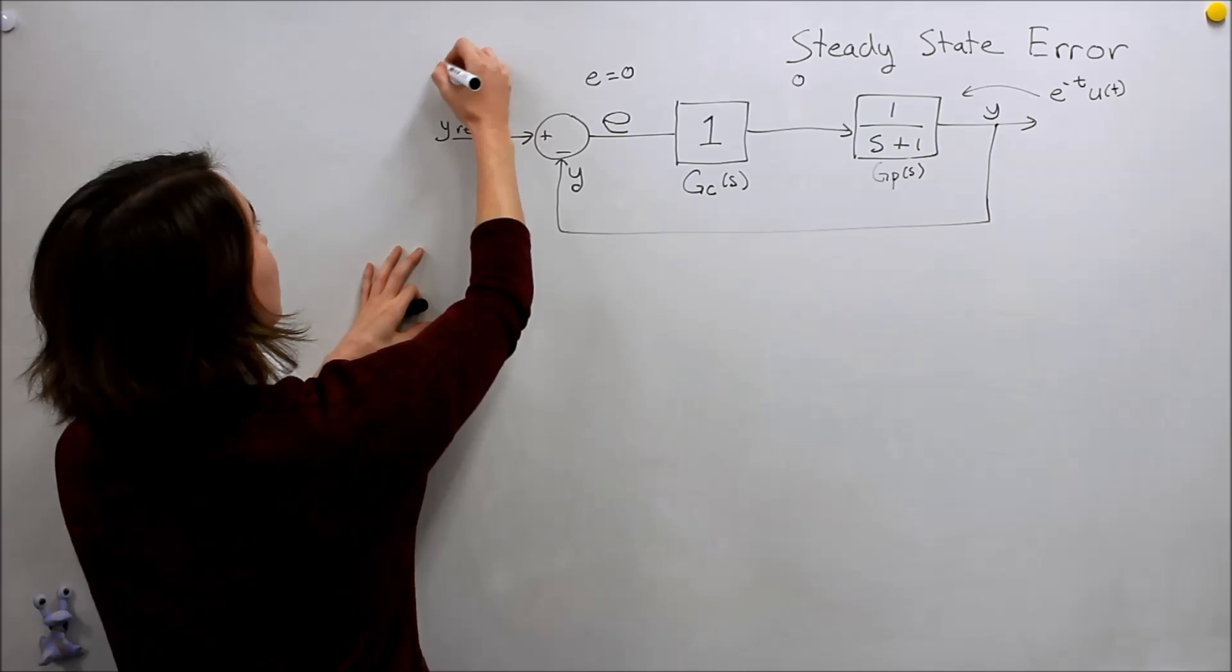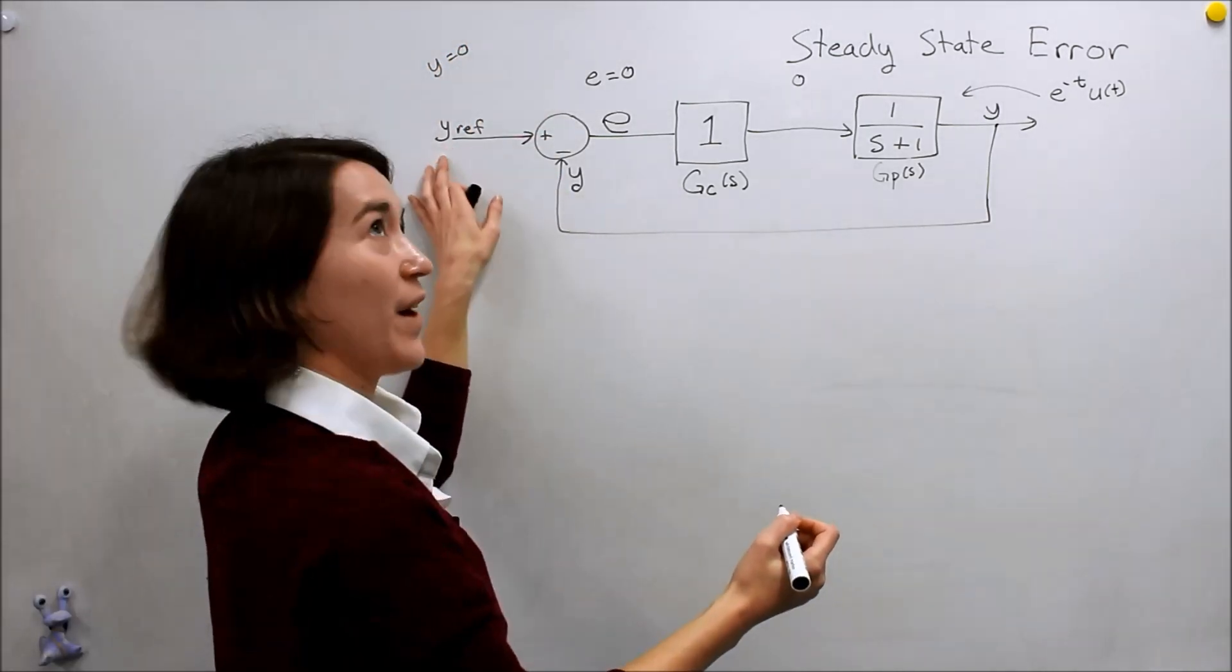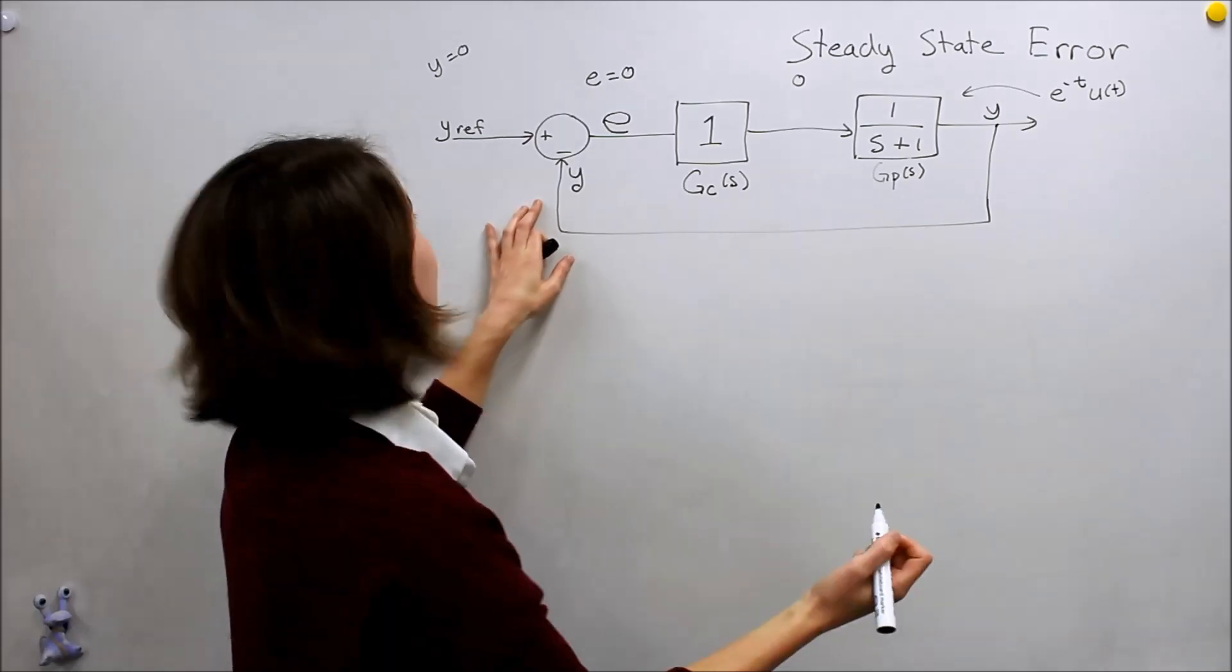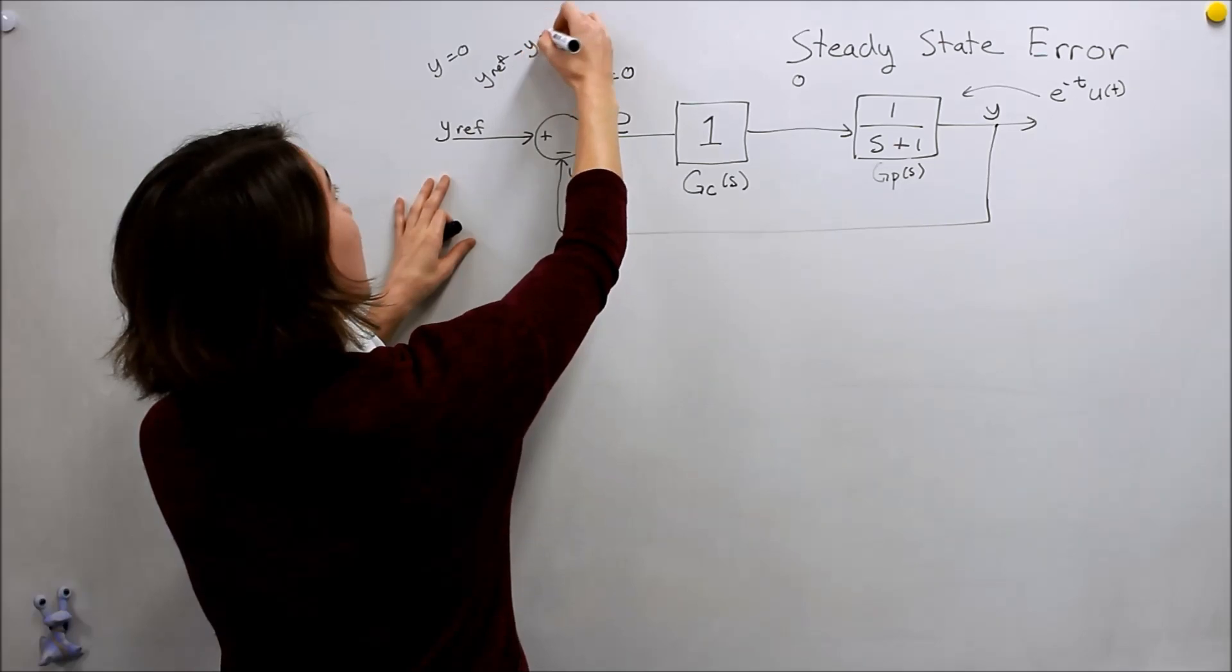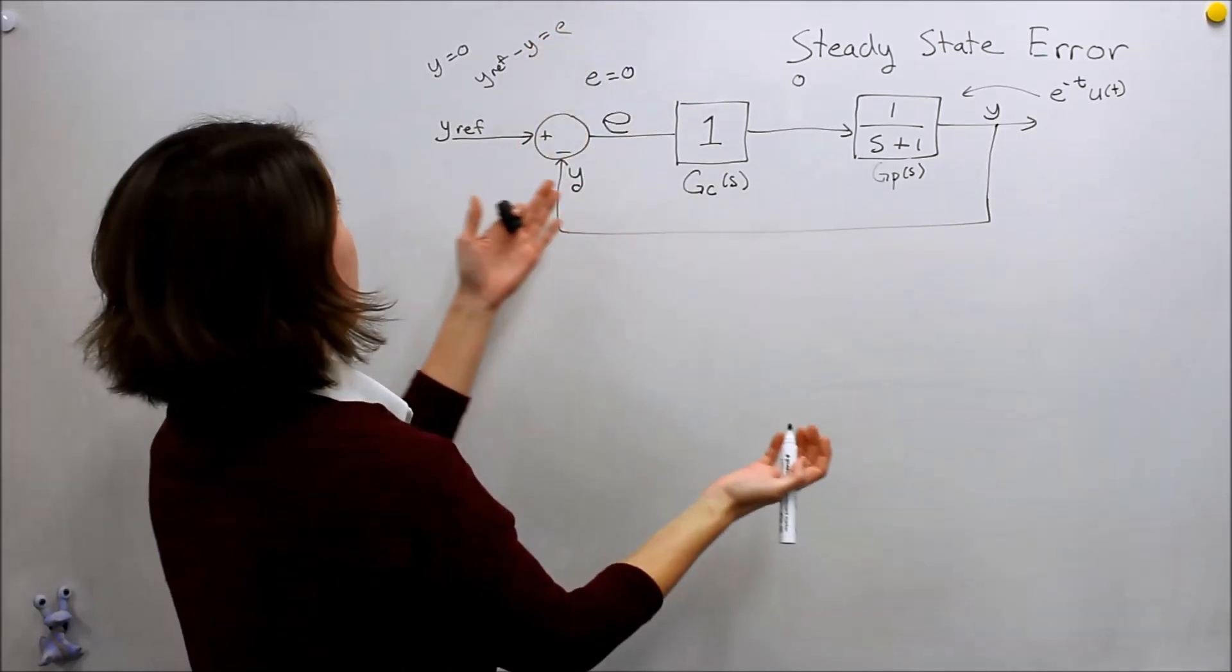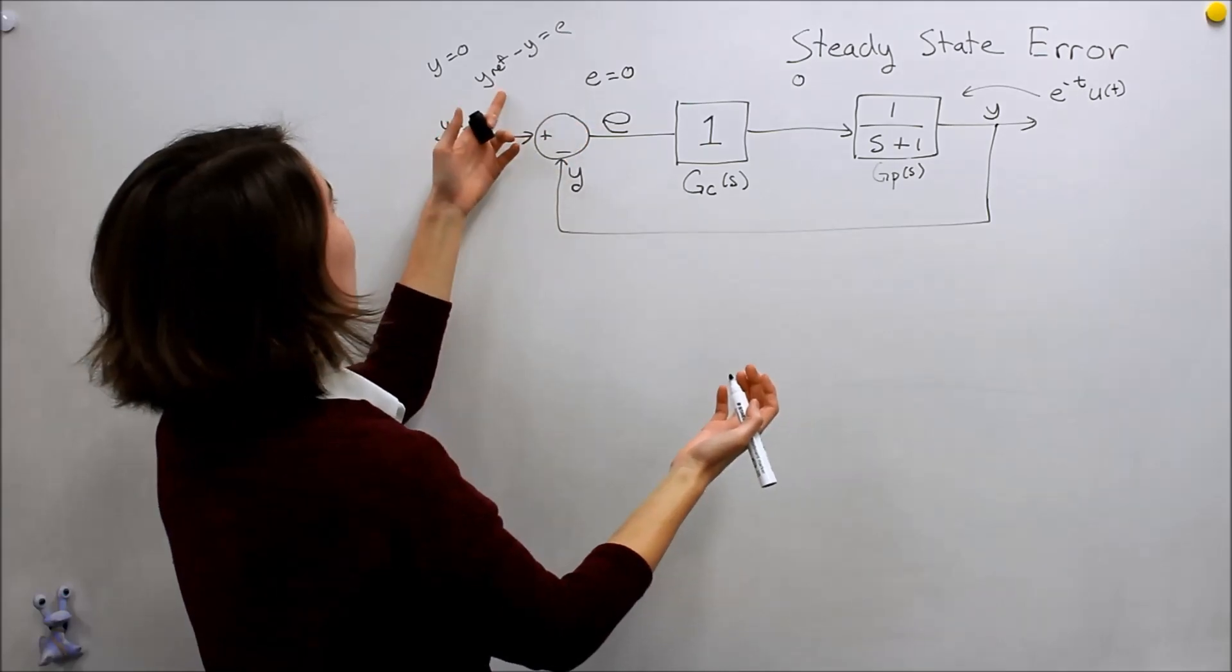If y is equal to zero, then y_ref - y, which is zero, y_ref minus y, which has to be equal to e. That's how we define it. But if this is equal to zero and that's equal to zero, we have a problem.